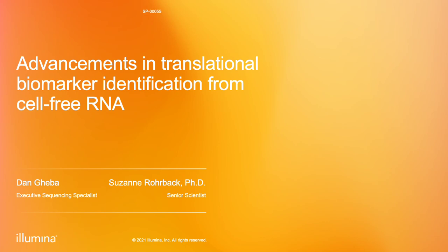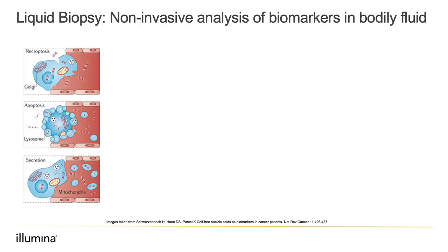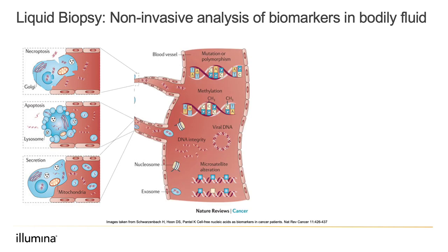Let's start with some introductions. In order to appreciate the method we're about to share, let's take a step back and cover some basics. Every cell and tissue in the body has a blood supply and through various cellular processes, their contents are often spilled into that supply and shuttled away throughout circulation. By sampling blood using various techniques, including Illumina sequencing, you can analyze these contents and sample those tissues remotely — hence the term liquid biopsy.